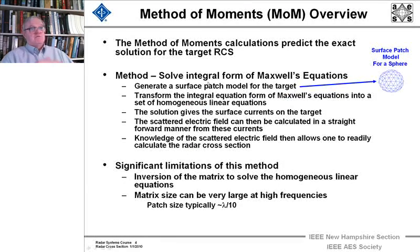Okay, now here's the next shorter cookbook version without equations of how the method of moments works. The first thing we have to do is solve the integral form of Maxwell's equations. And the first thing we do is we generate a surface patch model of the target. And by that I mean we make a model of the target which consists of small pieces, each piece of which is a plane. And in this case, and in most cases, triangular patterns, triangular pieces are used.